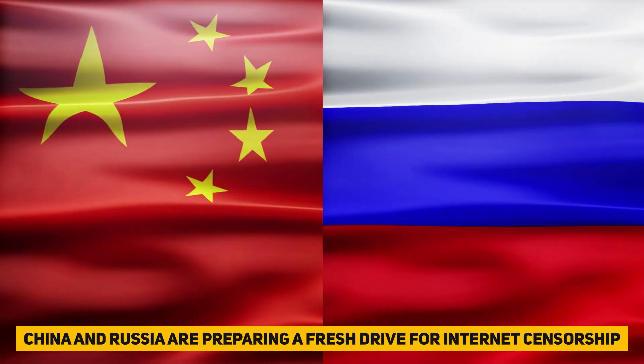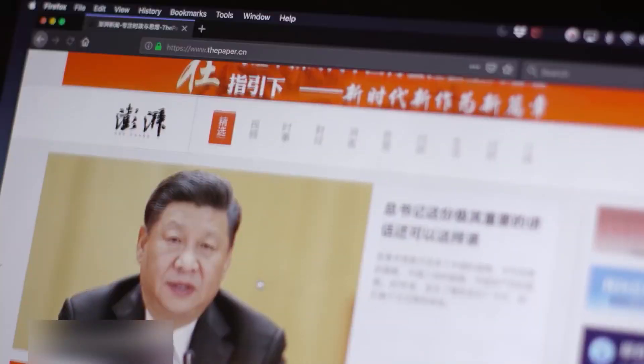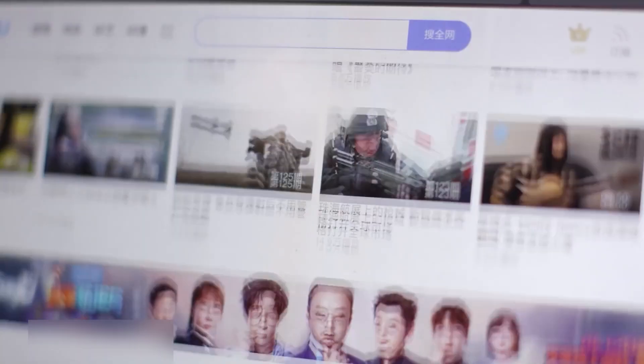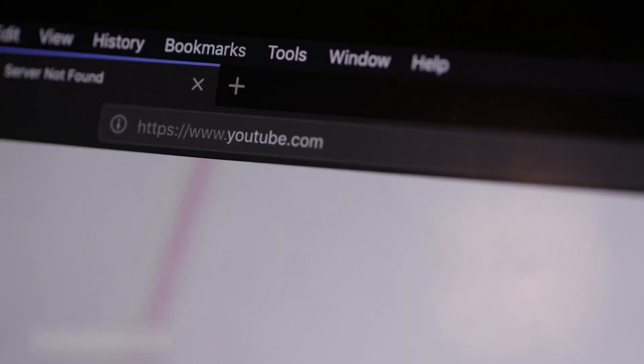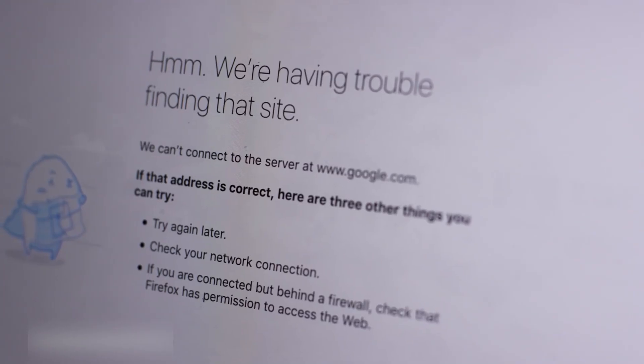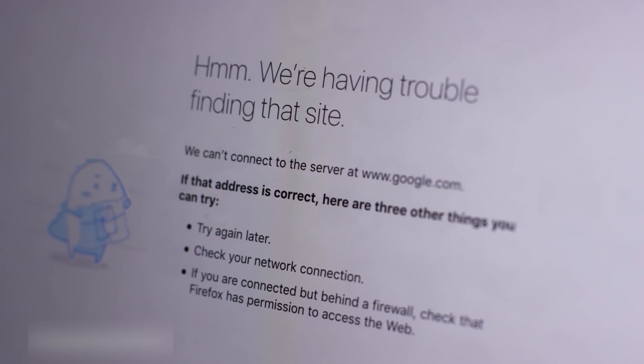China and Russia are preparing a fresh drive for internet censorship. Officials and stakeholders on both sides of the Atlantic expect China to reintroduce a centralized version of internet governance this week, bringing the debate into political rather than technological ground.